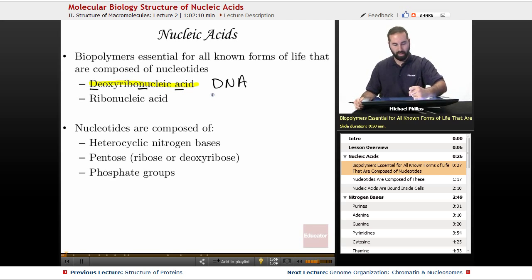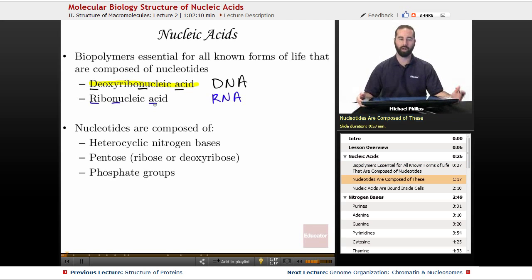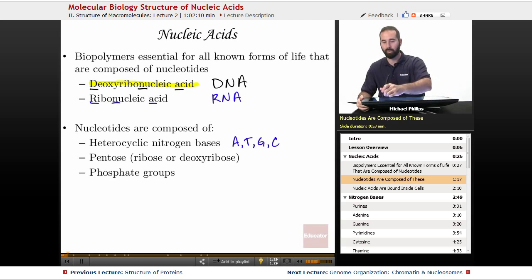Now nucleotides are composed of heterocyclic nitrogen bases, and as we're going to see later, those are A's, T's, G's, C's, and when we're going to talk about RNA, they will also have a U.